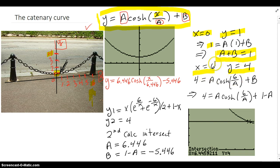So I plug that in. 4 is equal to A, cosh of 6 divided by A plus B. And B from earlier is 1 minus A. So B becomes 1 minus A. So there's my form.